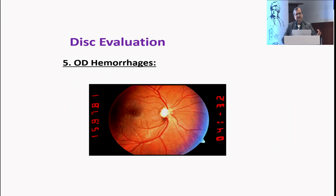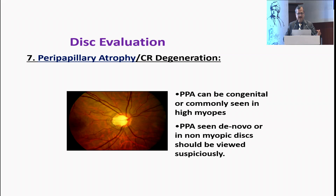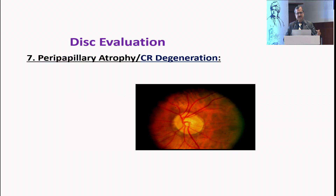Always rule out the presence of a hemorrhage — look out for a hemorrhage and make sure that there is none. The nerve fiber layer defect appears as a dark wedge that touches the disc and fans out into the periphery. You may see a small hemorrhage, and as a result, a nerve fiber layer defect, which can be seen better with red-free light. Peripapillary atrophy and core retinal degeneration should also be taken into consideration when evaluating the disc structurally.